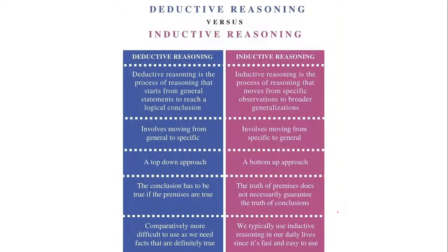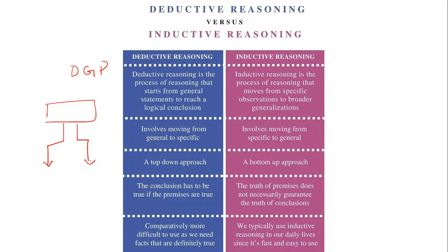Deductive reasoning is the process of reasoning that starts from a general statement to reach a logical conclusion — DGP, from general to particular. It involves moving from general to particular or specific, so it is a top-down approach. From a general statement, we come to a particular point, which is why it is called top-down. The conclusion has to be true if the premises are true.